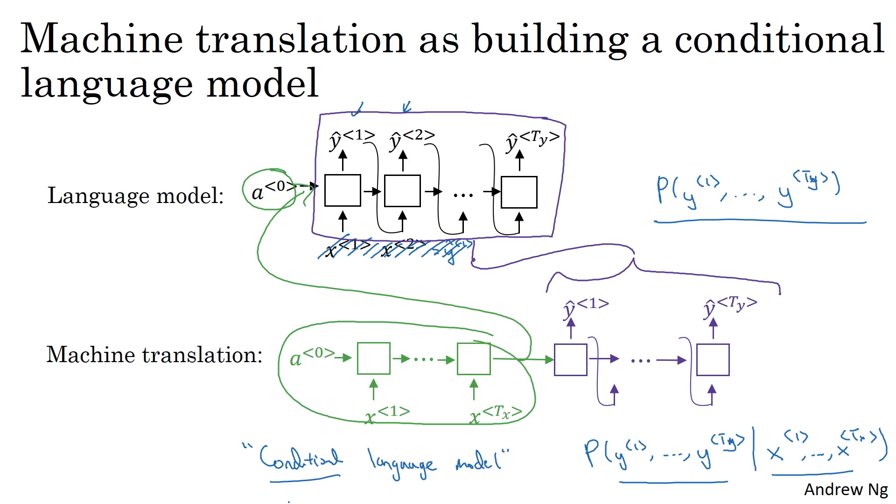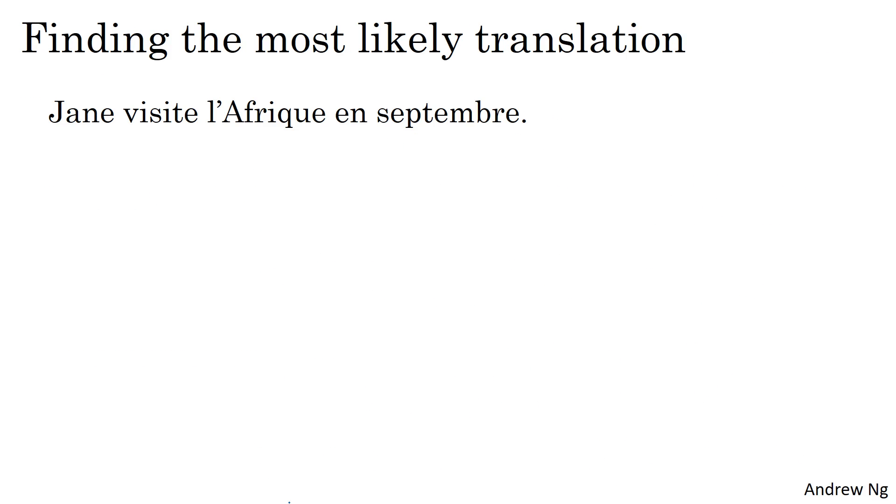Now, if you want to apply this model to actually translate a sentence from French into English, given this input French sentence, the model might tell you what is the probability of different corresponding English translations. So this is X, the French sentence Jane visite l'Afrique en septembre.